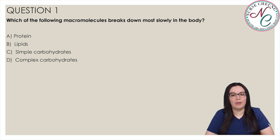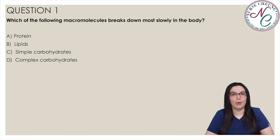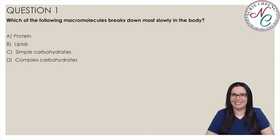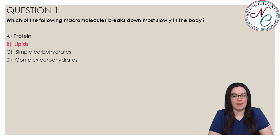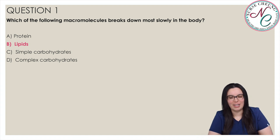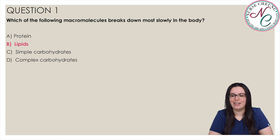Question 1: Which of the following macromolecules breaks down most slowly in the body? Is it A) Proteins, B) Lipids, C) Simple Carbohydrates, or D) Complex Carbohydrates? The correct answer is B) Lipids. Lipids break down more slowly in the body than either protein or carbohydrates. Complex carbohydrates break down more slowly than simple carbohydrates, but not as slowly as protein and lipids.